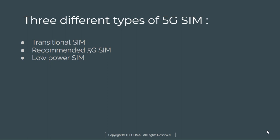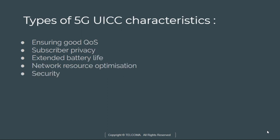The second type is the recommended 5G SIM, which uses the full power of 5G Phase One for enhanced mobile broadband. The SIM Alliance recommends adopting this SIM at 5G launch, as it offers full backward compatibility and is the most future-proof. The third type is the low-power SIM, optimized for low-power IoT use cases, for which NB-IoT and LTE-M can be used.